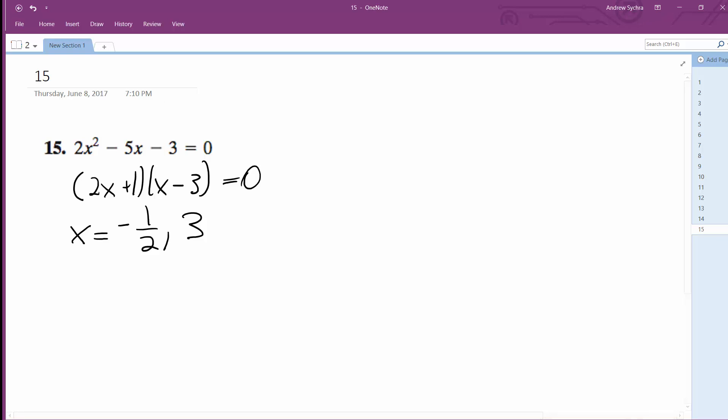We can test this. So here's the solutions. If you want to watch me run this, go ahead. So we're going to get 2 times negative 1/2 squared minus 5 times negative 1/2 minus 3.